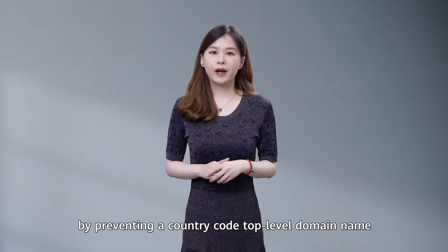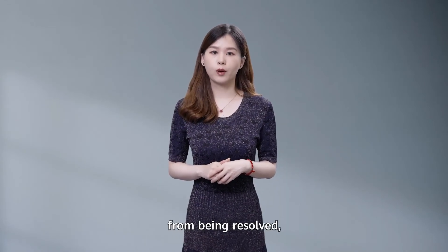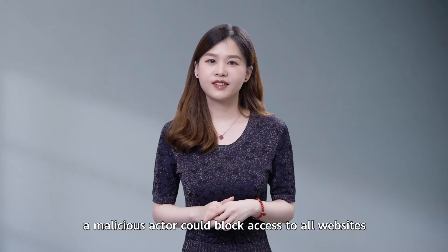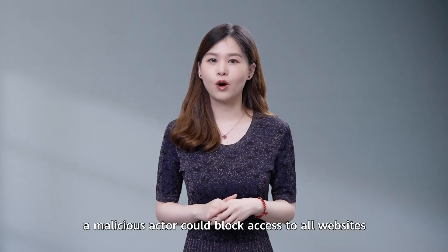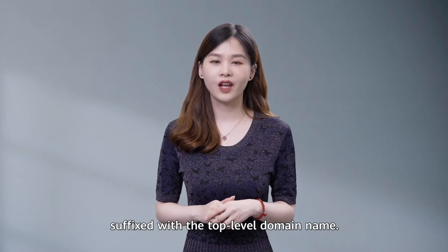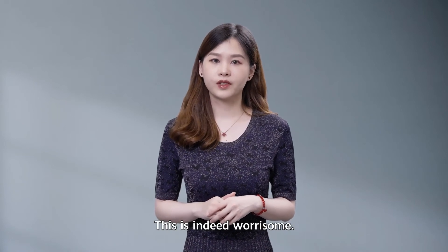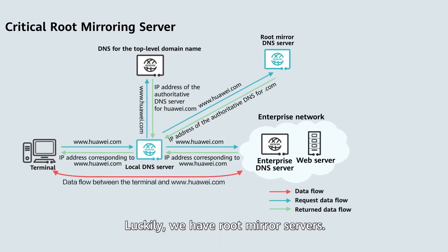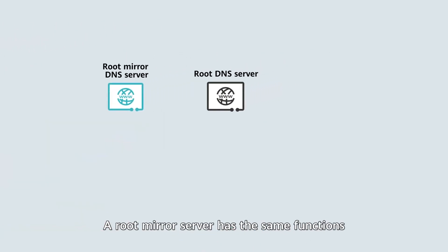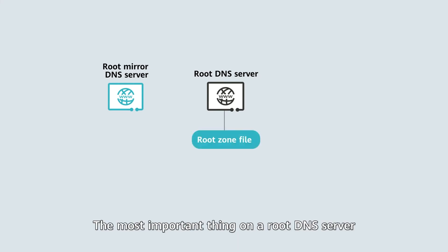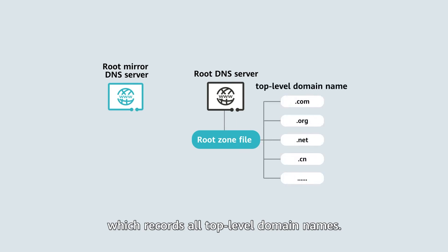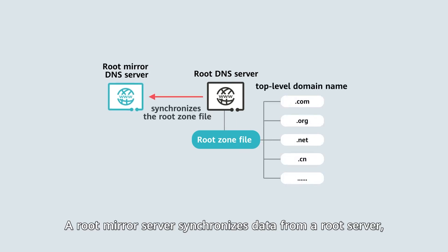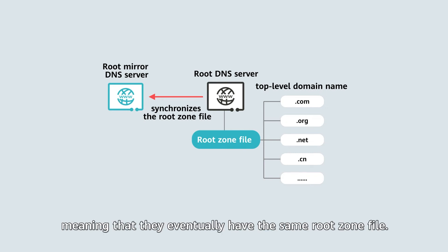For example, by preventing a country's top-level domain name from being resolved, a malicious actor could block access to all websites suffixed with that top-level domain name. This is indeed worrisome. Luckily, we have root-mirror servers. A root-mirror server has the same functions as a root server. The most important thing on a root DNS server is the root zone file, which records all top-level domain names. A root-mirror server synchronizes data from a root server, meaning that they eventually have the same root zone file.